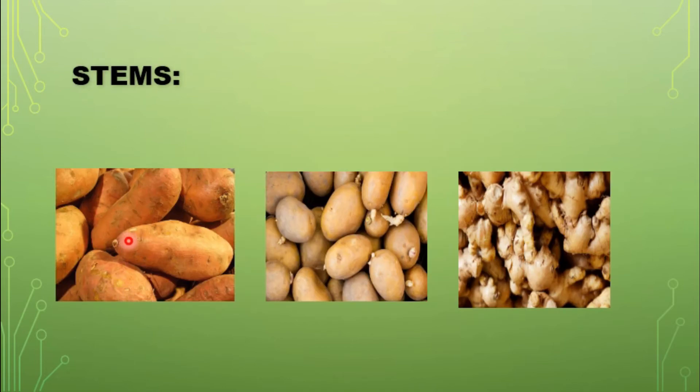Potato and ginger are some examples of edible stems that store food prepared by the plants.